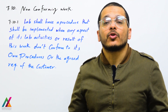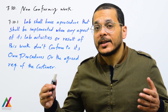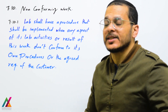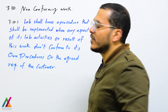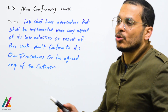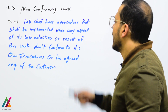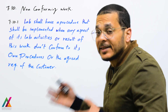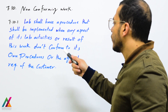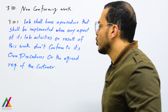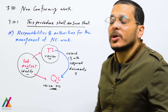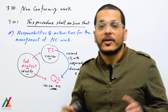After understanding non-conforming work — what it means, the whole process for solving non-conformity, and the responsible persons at every step — the requirement of ISO/IEC 17025:2017 states: the lab shall have a procedure that shall be implemented when any aspect of its lab activity, testing or calibration work, or the result of this work, does not conform to its own procedures or the agreed requirements of the customer.